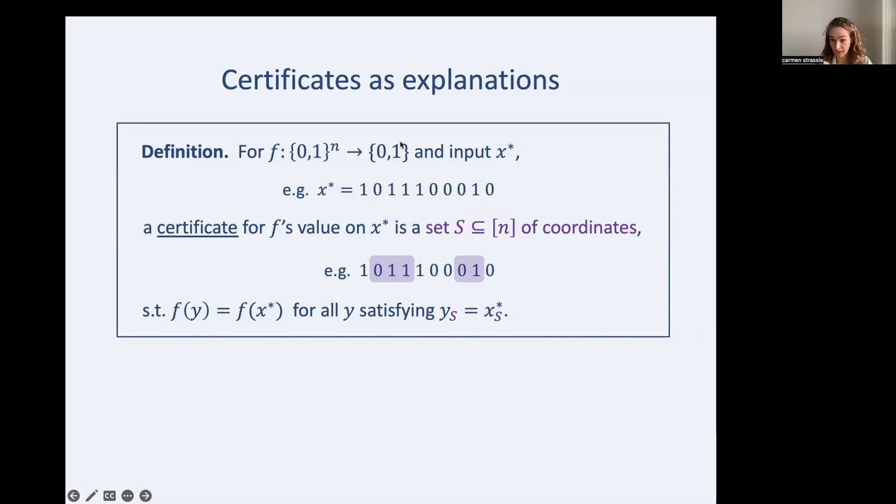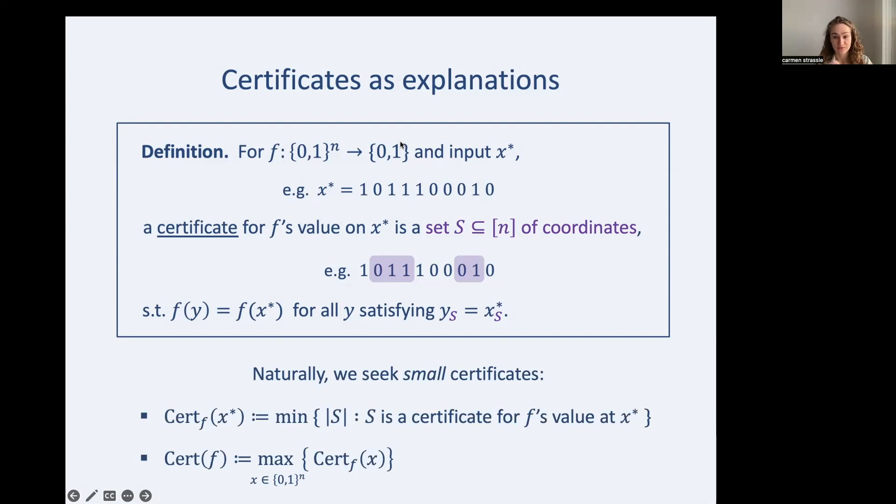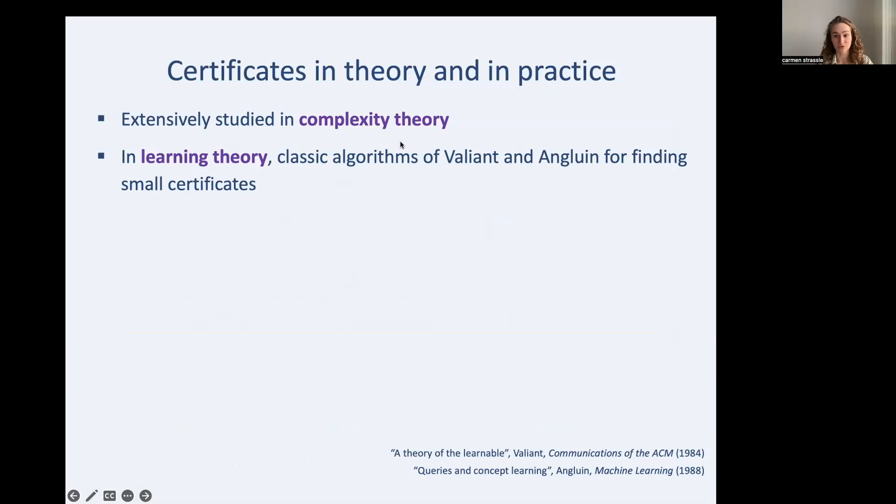In other words, fixing the coordinates of S to match x star should render the function constant. So if we're using certificates as our explanations, naturally, we want a simple explanation or equivalently, a short certificate. We write cert sub f of x star to denote the size of the smallest certificate for f on a specific input x star. And we define the certificate complexity to be the maximum of cert sub f of x for the worst input x. So it's the length of the shortest certificate for the worst x. We're taking a maximum of a minimum here.